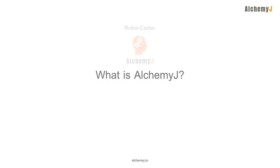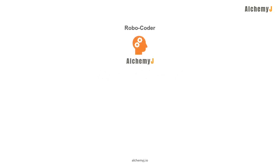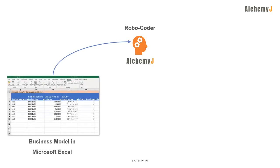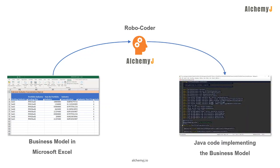AlchemyJ is a robocoder. It takes the business of financial models in Excel spreadsheet, then analyzes the spreadsheet, designs and generates various open APIs, such as microservice or REST API. The generated API will implement the models in Excel spreadsheet automatically.